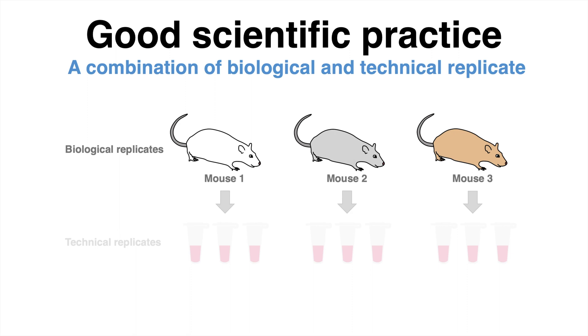A good advice to a scientist, at least for many experiments, is to use both biological and technical replicates. Back to the example with mice. This means a number of different individuals and of each a subset of different blood samples. This makes it easy to do statistics later.